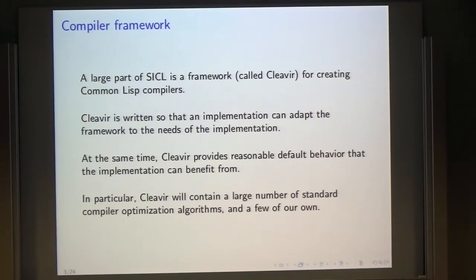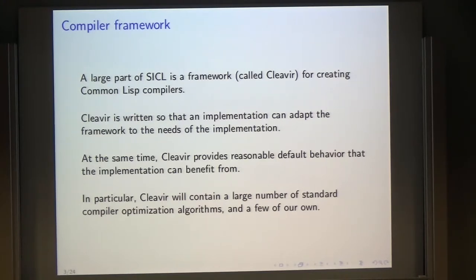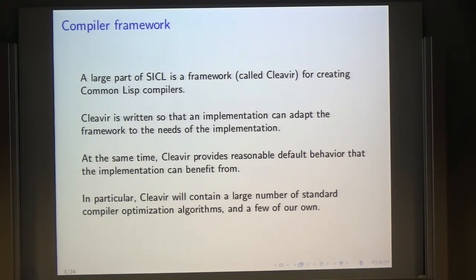It's meant to be adaptable to an implementation, so it provides possibilities for an implementation to adapt the way the compiler works. At the same time, in order to avoid that an implementation would have to supply too much information, it is supposed to provide as many reasonable defaults as possible. We intend to supply a complete library of existing compiler optimizations that you can find in the literature, and hopefully a few of our own.